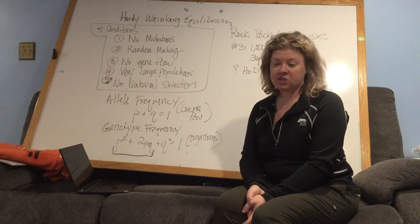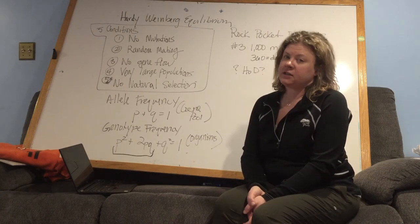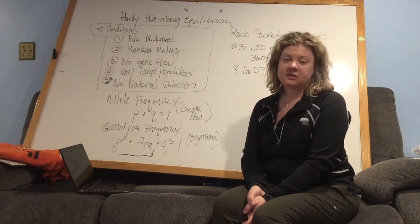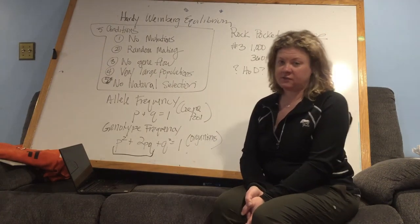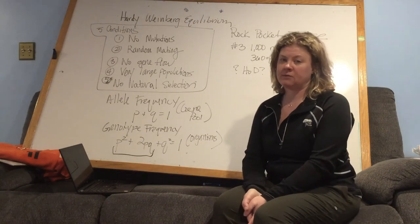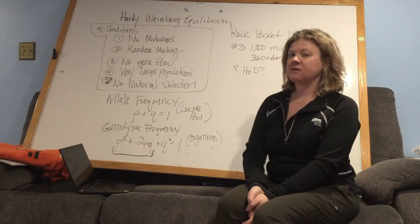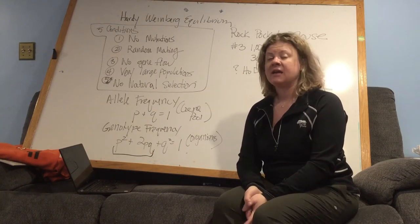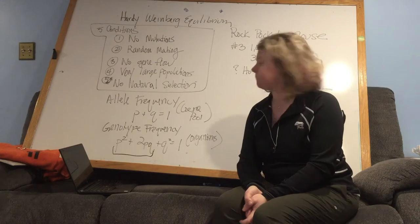Very large populations. So small islands would be exempt from this because they are very small populations. And then no natural selection. So nothing gives you a selective advantage to survive and reproduce and pass on your genes. So those are the five conditions that have to be met. If any one of those conditions is not met, we would say the population is not at Hardy-Weinberg Equilibrium.